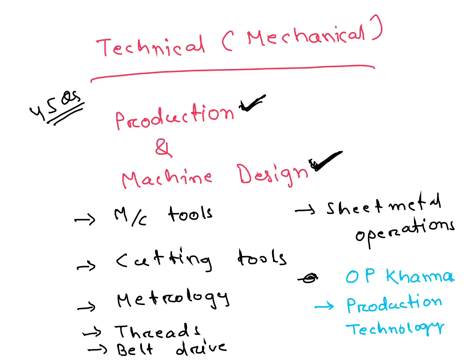From Production Technology: machine tools are important — lathe machine, milling machine, drilling machine. Cutting tools are also important. From metrology and quality control, questions are also asked. From Machine Design: different thread forms and their uses are important. Belt drive — one or two questions are asked. Sheet metal operations are also important.